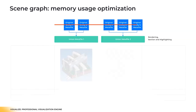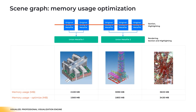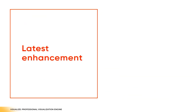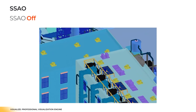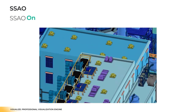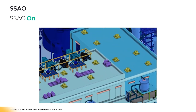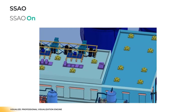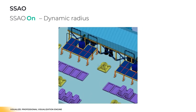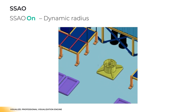Another critical scene graph bottleneck is overall memory usage. We reduced scene graph memory usage by eliminating intermediate geometry data previously kept to facilitate selection and highlighting processes. We also improved our screen space ambient occlusion (SSAO), a rendering technique that adds global illumination effects to the scene. We now use enhanced blur to avoid shadow noise, and SSAO can be adjusted for different zoom levels, either manually or in automatic mode.